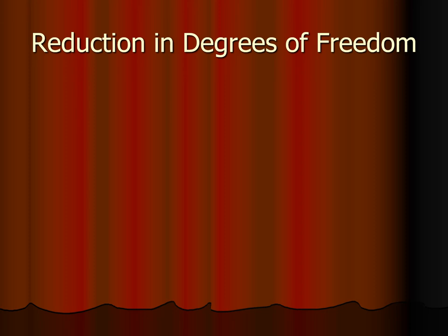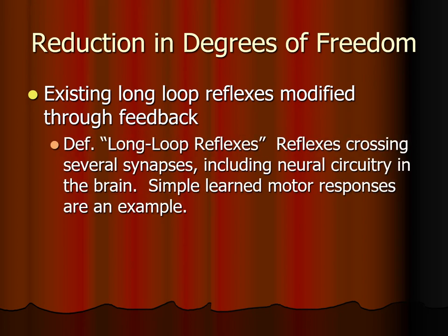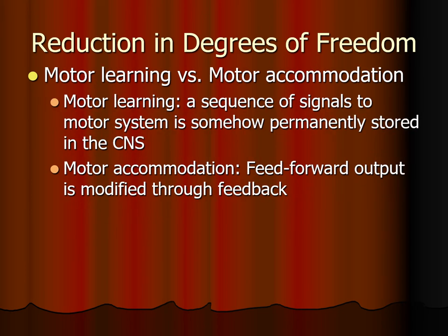Long loop reflexes also reduce the degrees of freedom, and they are those which do include the brain and go through several synapses. Simple learned motor responses include long loop reflexes. For example, right now you can just make the motions with your fingers of tying your shoes — you've done that thousands and thousands of times. That finger motion is an example of a long loop reflex. Long loop reflexes can be developed through motor learning, which is when a sequence of signals to the motor system is somehow permanently stored in the central nervous system.